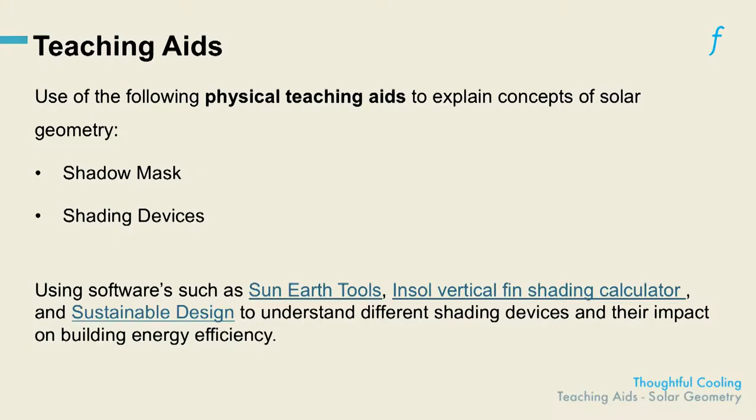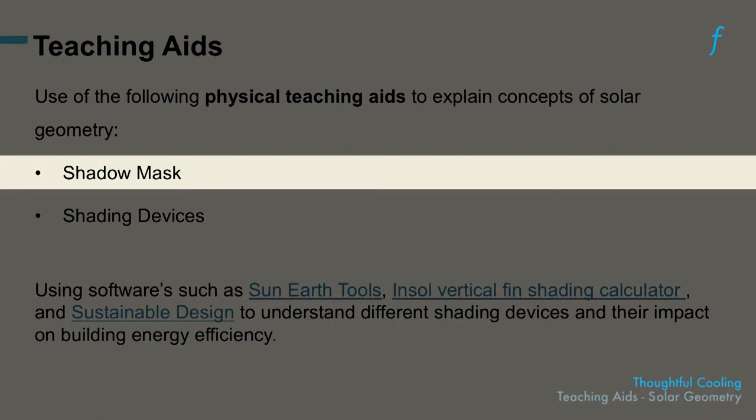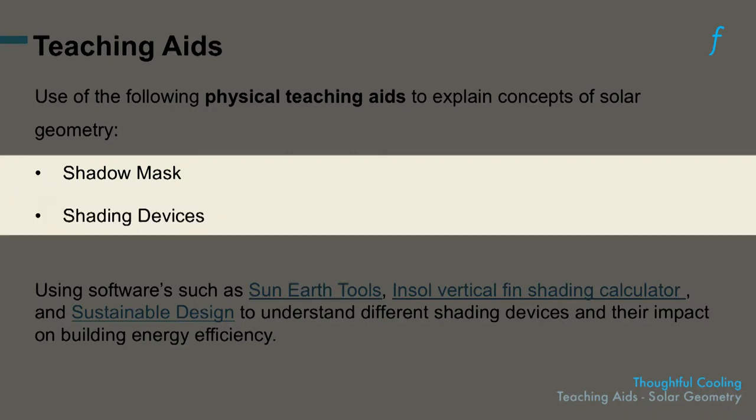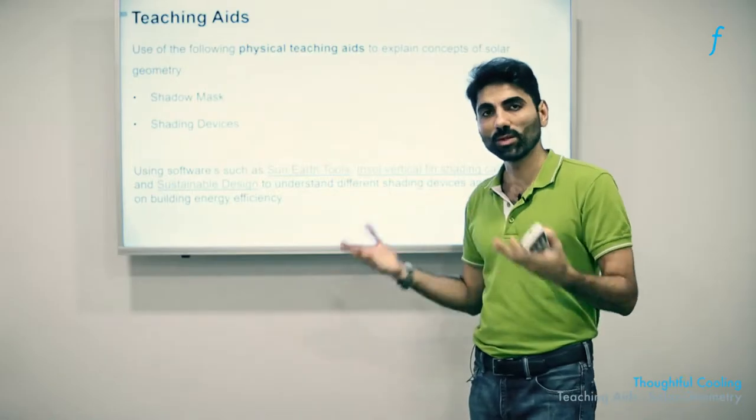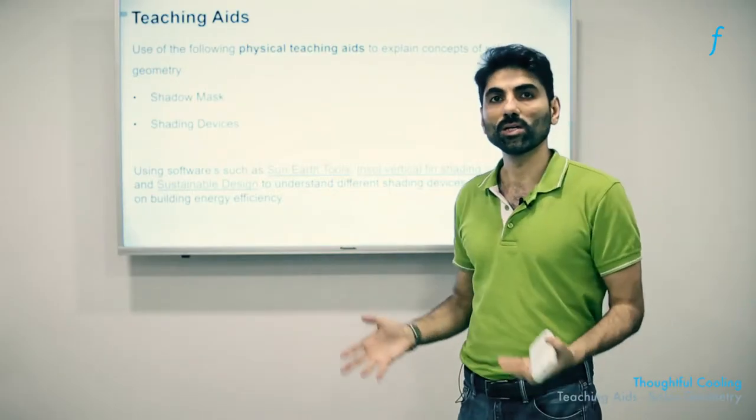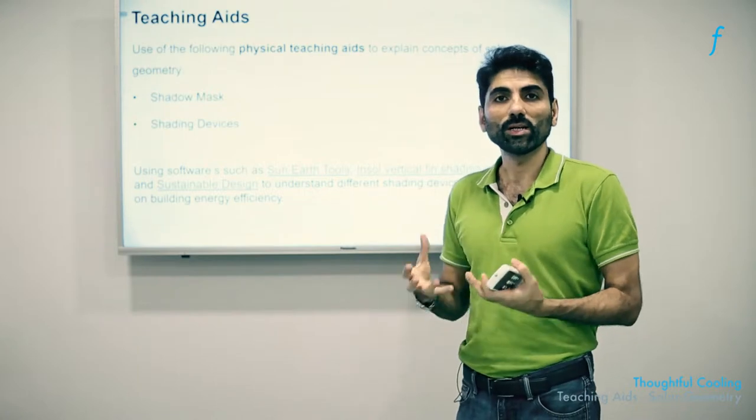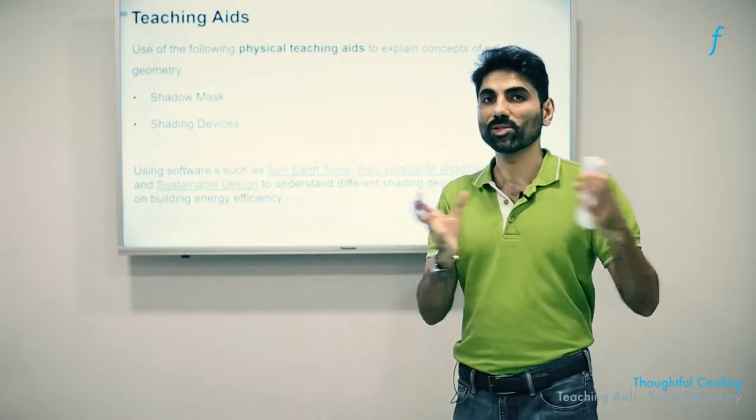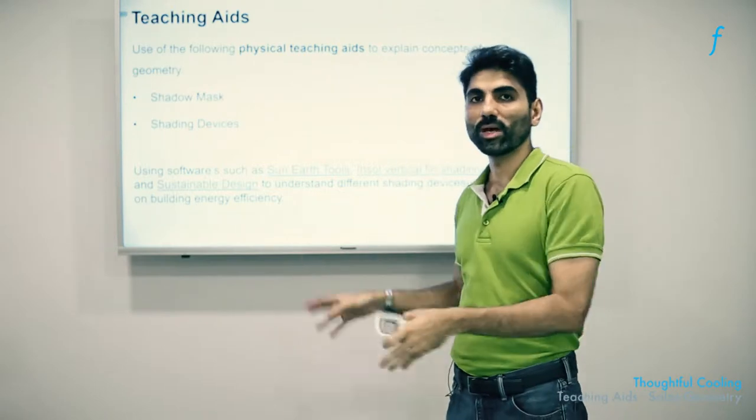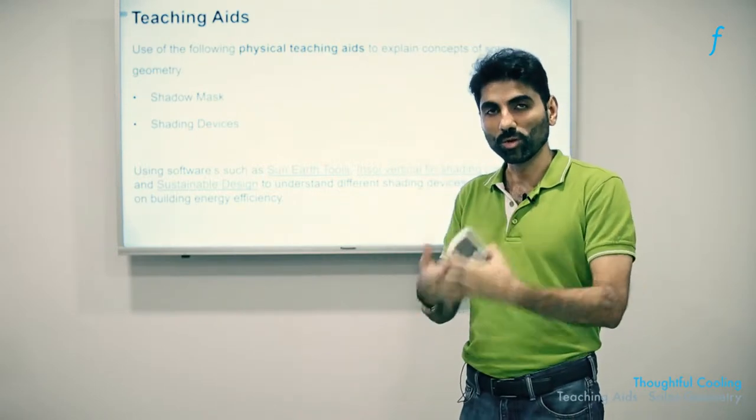The first two ideas we have for teaching aids have already been addressed in the earlier parts of the training. One is the shadow masking exercise, which students could do for real objects around their own building or college building. Also, the exercise on how to shade or size the shading devices, perhaps even for their own home if they have experienced solar radiation issues. These could be very useful examples that they could work upon rather than choosing abstract or remote locations where they do not have any emotional connection to that place.